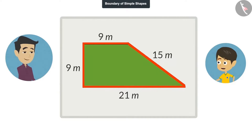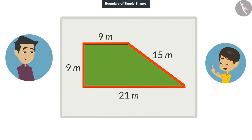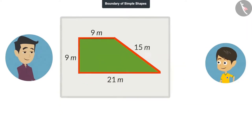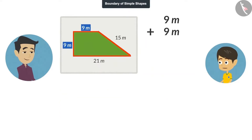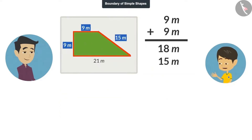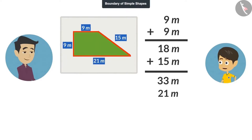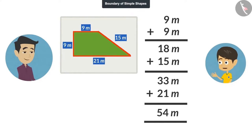Okay, now I know the length of all the lines. By adding these, I will get the length of the field's boundary. 9 meters added to 9 meters is 18 meters. 18 meters added to 15 meters is 33 meters. And 33 meters added to 21 meters is 54 meters. That means the boundary of this field is 54 meters.